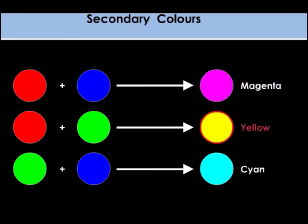Magenta, yellow and cyan are secondary colours. The addition of two primary light colours will produce secondary colours.